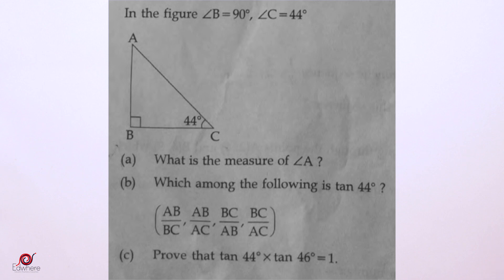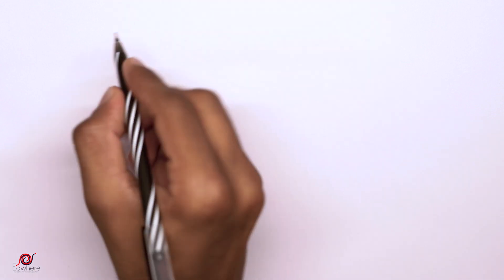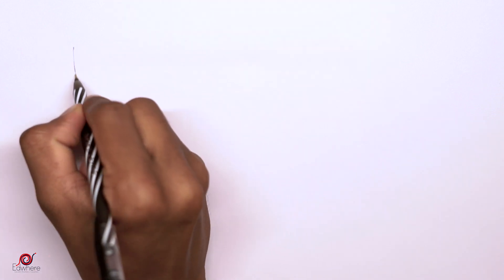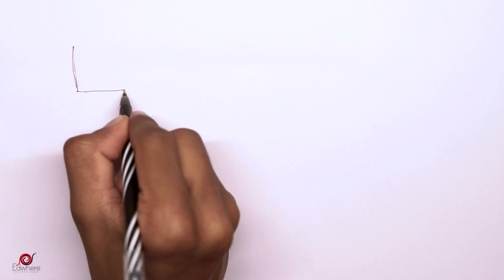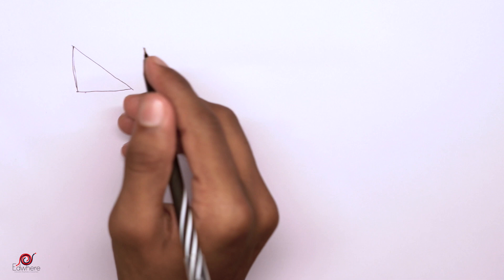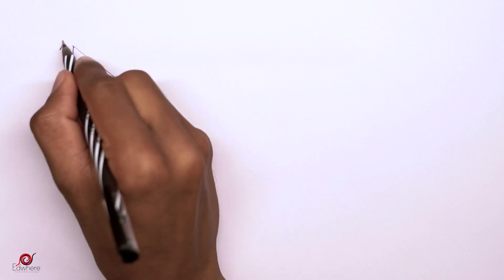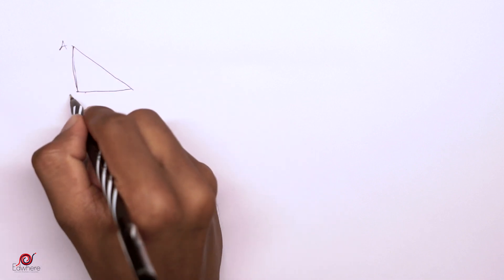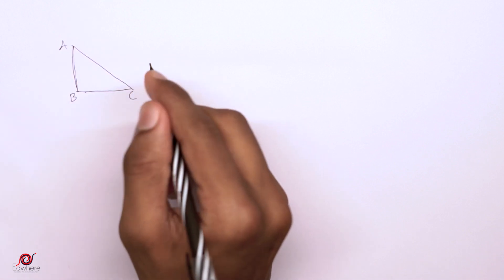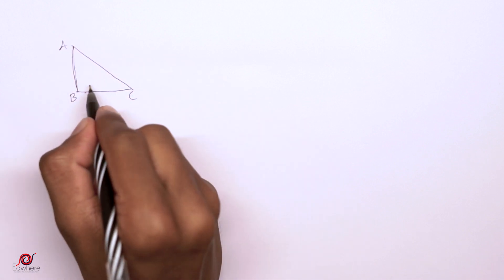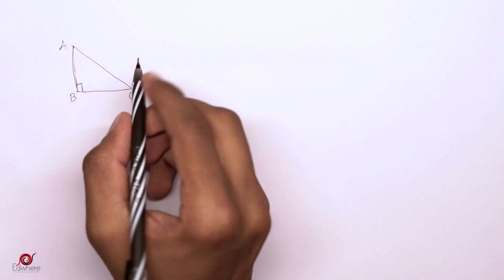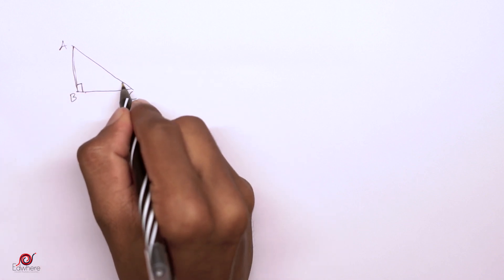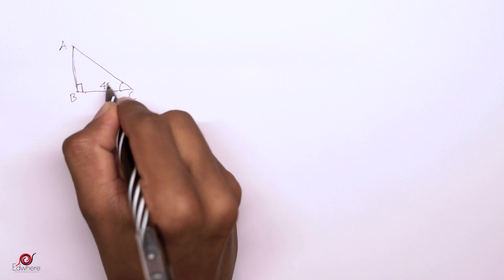Okay, let's do it. Let's add the figure. Triangle ABC: angle B is equal to 90 degrees and angle C is equal to 44 degrees.